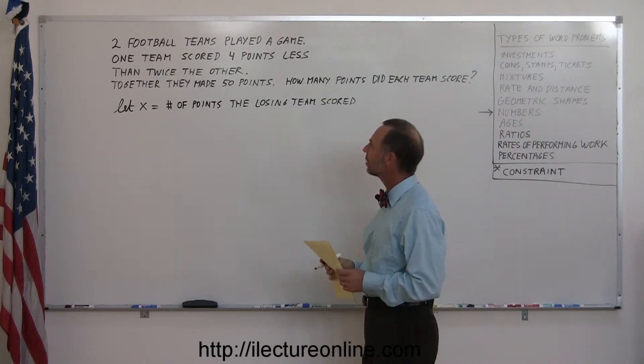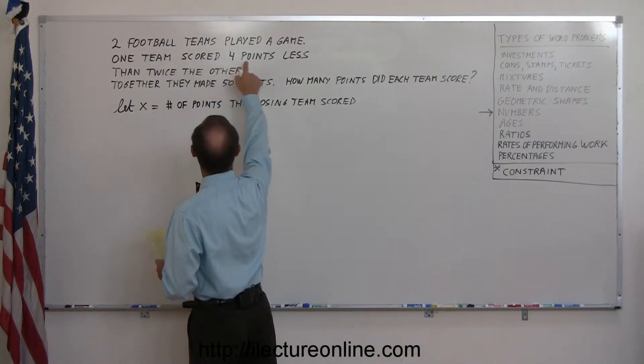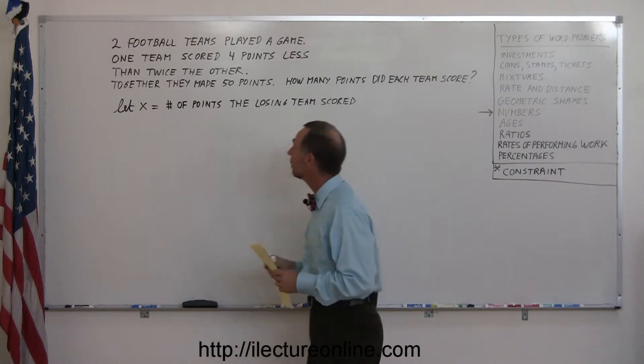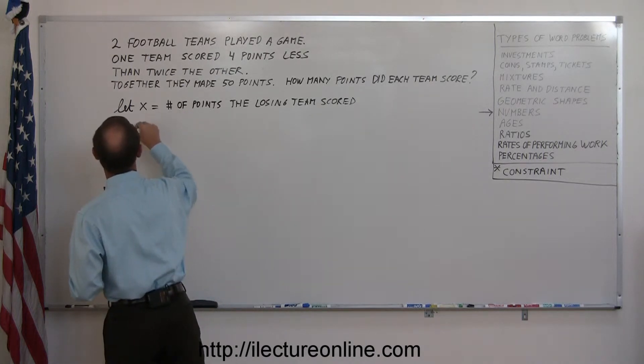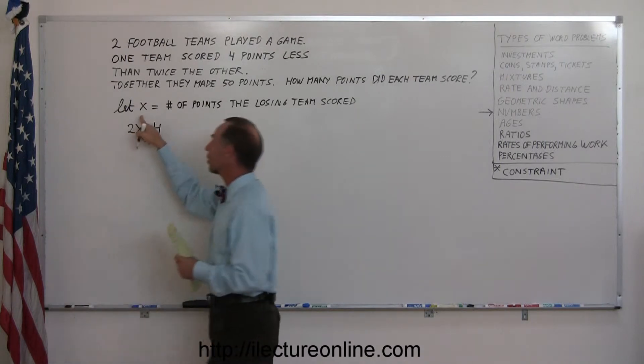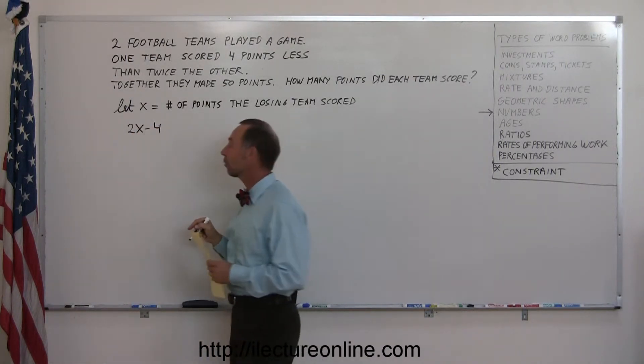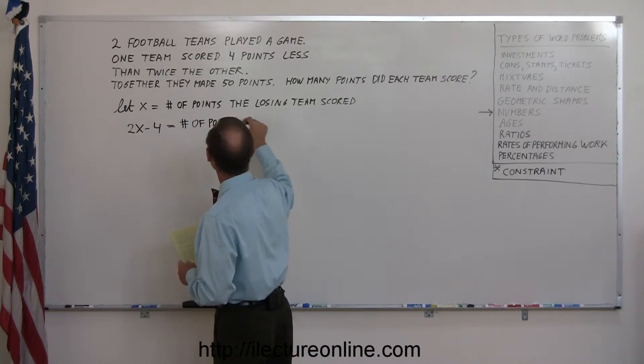So if x equals the number of points of the losing team, then how many points did the winning team score? And here they tell us, one team scored four points less than twice the other team. I'm assuming that's the winning team. Even if you're wrong, it'll still come out right. So, twice this would be 2x, and then four less would be minus four. This is twice the number that the losing team scored, minus four points. That equals the number of points the winner scored.